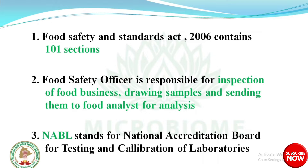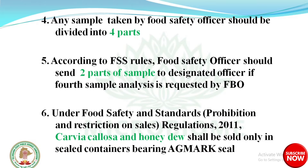The Food Safety Officer is responsible for inspection of food businesses, drawing samples, and sending them to the Food Analyst for analysis. NABL stands for National Accreditation Board for Testing and Calibration of Laboratories. Any sample taken by a Food Safety Officer should be divided into four parts according to FSS rules. The Food Safety Officer should send two parts of the sample to the Designated Officer.